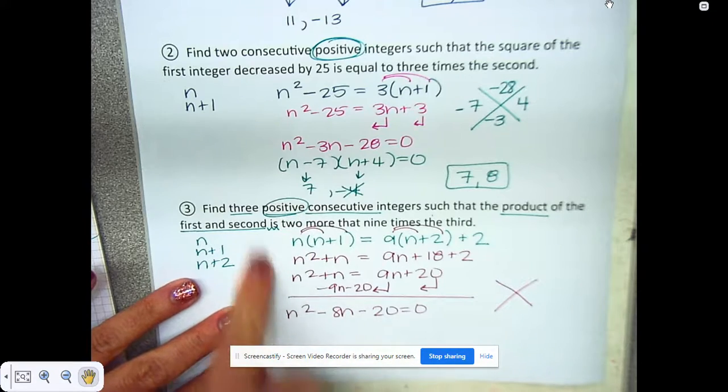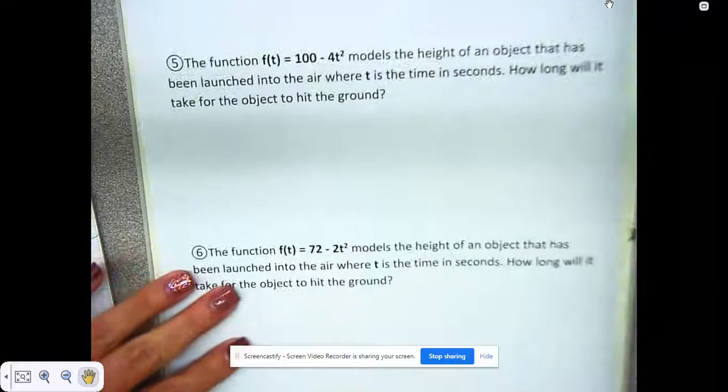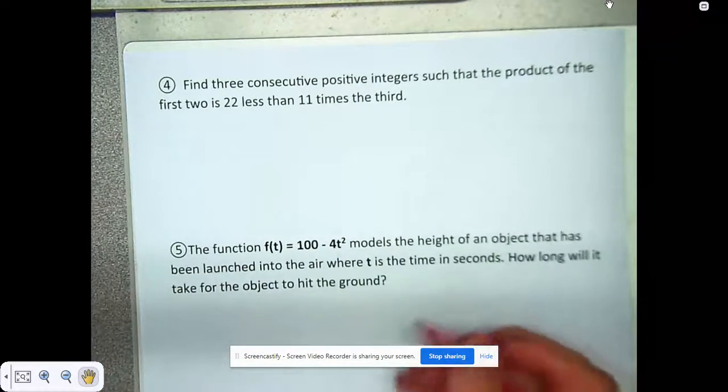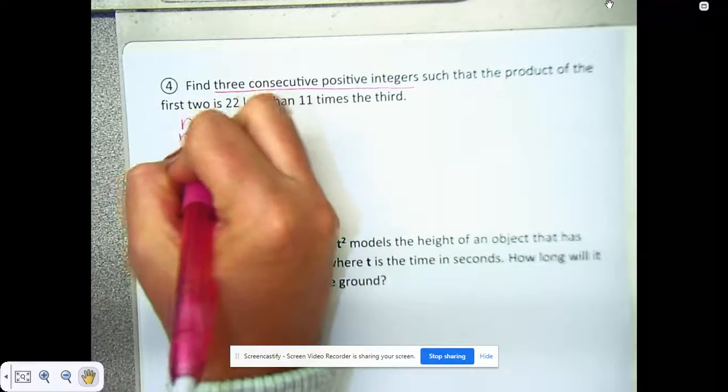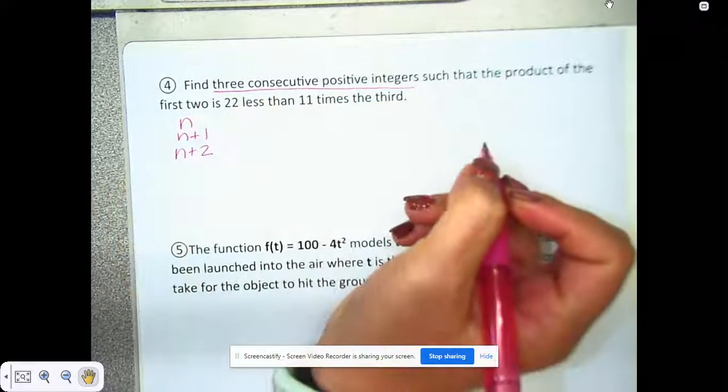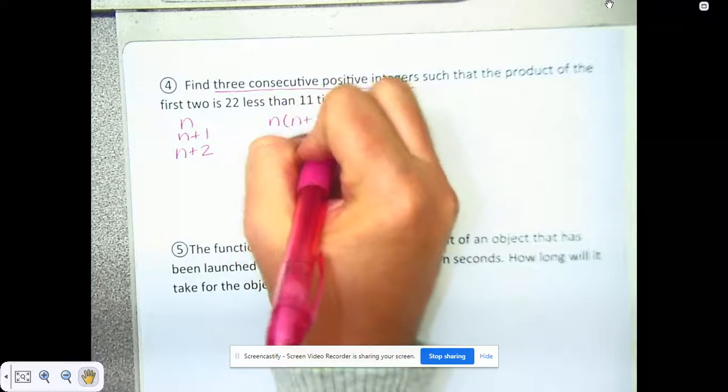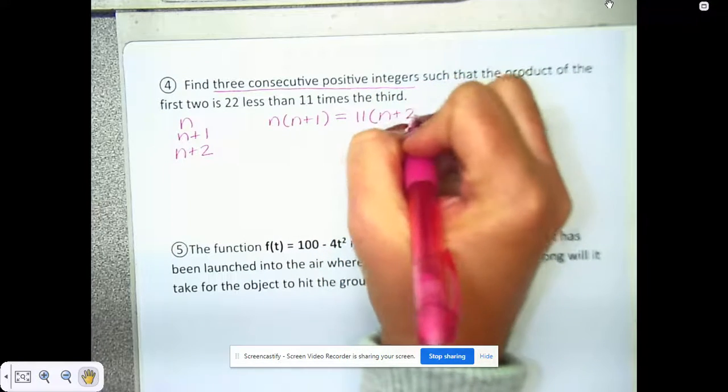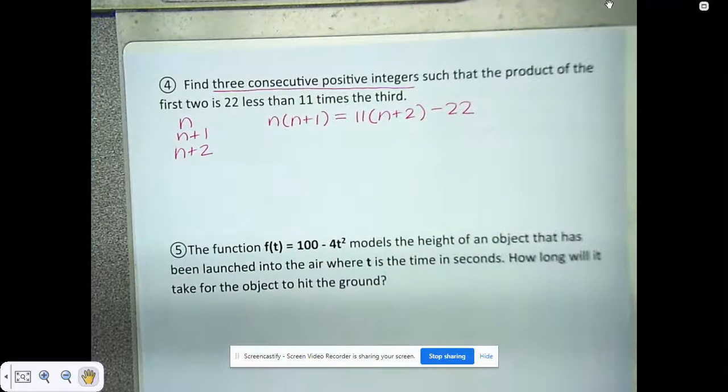Let's look at number four. Same thing, I'm going to set it up, make sure you're on the right track. Three consecutive positive integers, so that's n, n plus 1, and n plus 2, such that the product of the first two is 22 less than 11 times the third. So that's where you're going to start. I want you to distribute from there and solve.